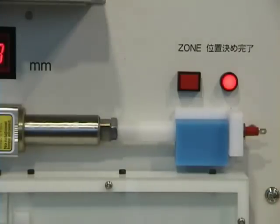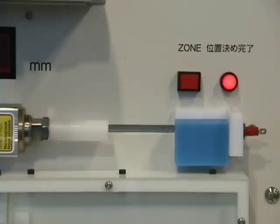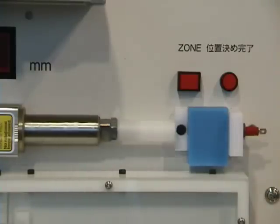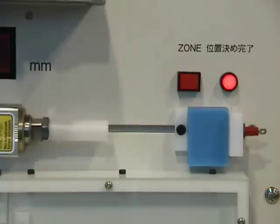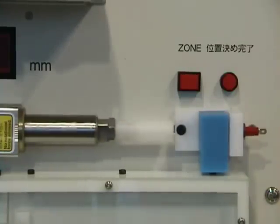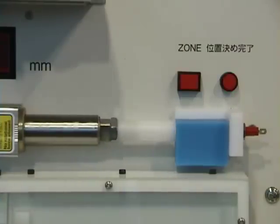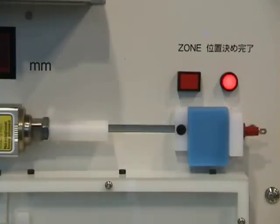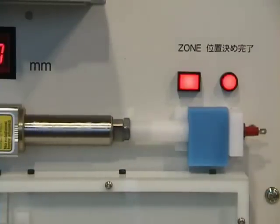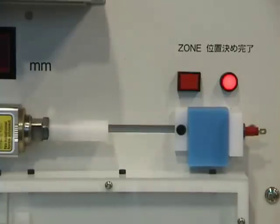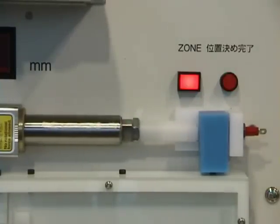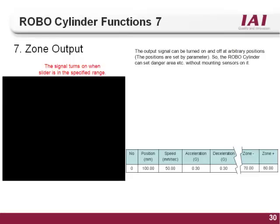This video shows the zone output in conjunction with a press move. The actuator will rapid advance and then press into the blue block. When the press force is met, the position complete light will illuminate. There is also a P-zone set for this application; when the actuator is within the set zone, the zone light will turn on. In order for it to be a good part, we need to see both the zone output as well as the position complete output. If one is seen without the other, it indicates either the part is too small or too big.